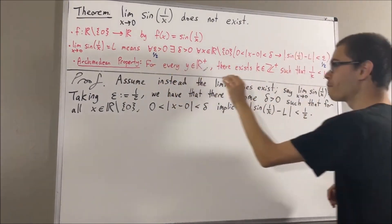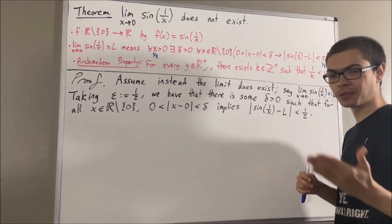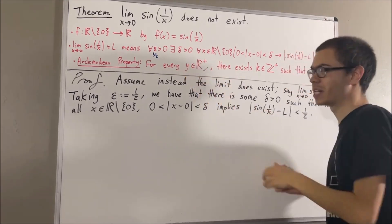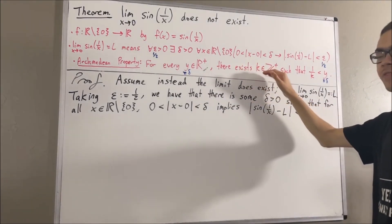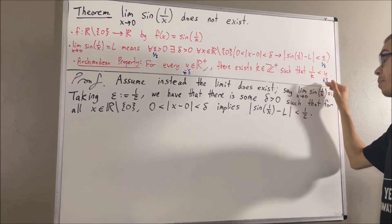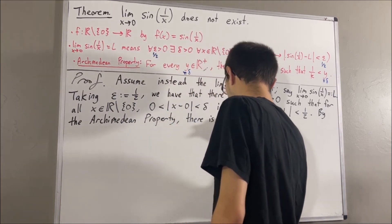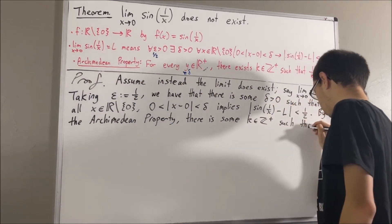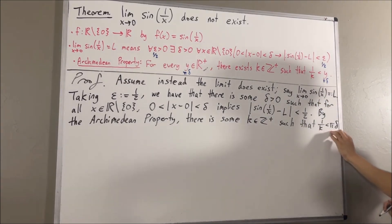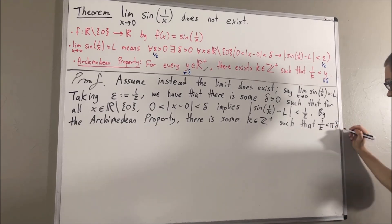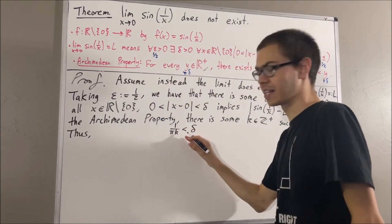This statement works for every positive real number, so in particular it must work for the positive real number pi times delta. Taking y to be pi times delta, we have that there is some positive integer k such that one over k is less than pi times delta. Dividing pi to the other side, we get that 1 over pi k is less than delta.